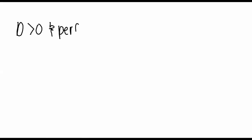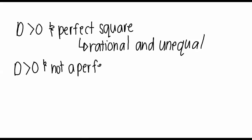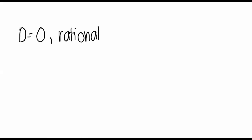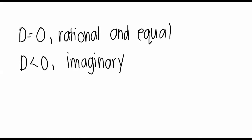When our discriminant is greater than zero and is a perfect square, the roots of the equation are rational and unequal. When the discriminant is greater than zero but is not a perfect square, our roots are irrational and unequal. When the discriminant is equal to zero, the roots are rational and unequal. But if the discriminant is less than zero, the roots are now called imaginary or complex.